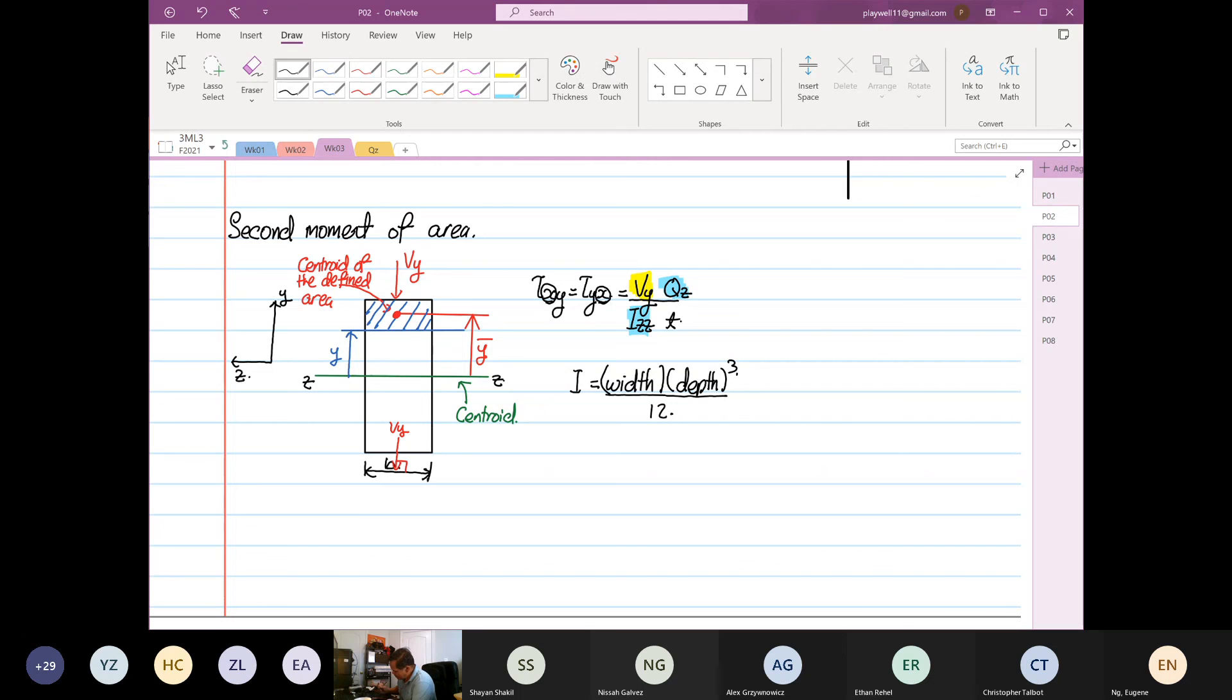So when is it a width? The width is parallel to the Izz or Z-axis. That's the width. And why Z-axis? Because we are interested in Izz, the second moment of area about the Z-Z-axis. The depth is perpendicular to the Z-axis.